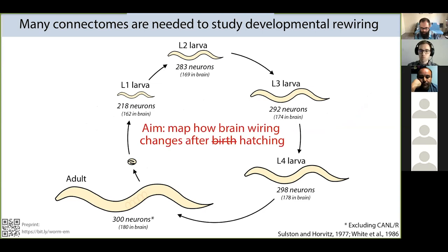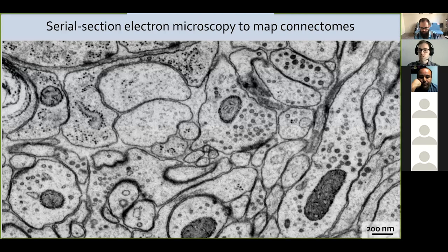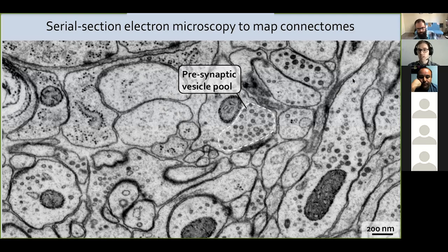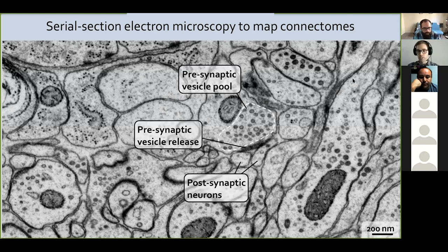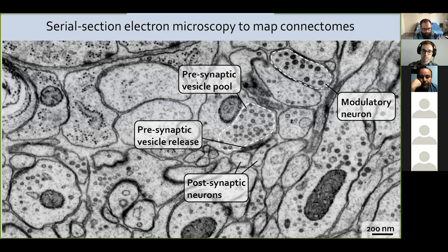To do this, we developed a high-throughput serial section electron microscopy pipeline. Here I'm showing one example of what an EM image looks like — we can see individual neurons, some smaller, some bigger, and we can see chemical synapses, evident by a pre-synaptic vesicle pool, a pre-synaptic density, and one or more post-synaptic partners. Because our samples were prepared by high-pressure freezing, preserving the ultrastructure of the tissue, we can see intracellular details like dense core vesicles, indicating modulatory neurons releasing neuropeptides. Gap junctions can also be seen, but their identification is more subjective, so they're excluded from the analysis today.